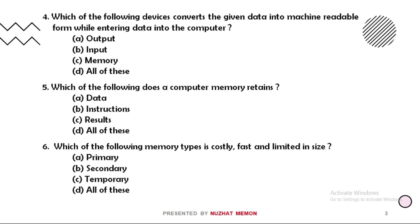Fourth: which of the following devices converts the given data into machine readable form while entering data into the computer? The correct option is option B, that is input. Fifth: which of the following does a computer memory retain? The correct option is option D, that is all of these - data, instructions, and results.